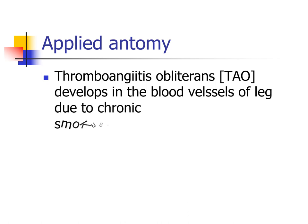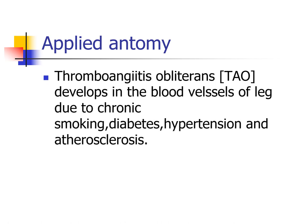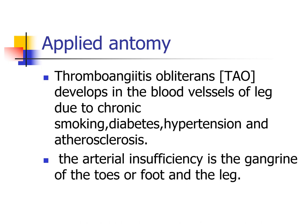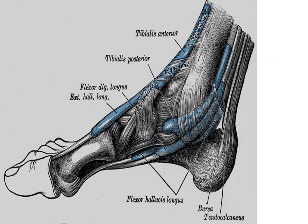Applied anatomy: thromboangitis obliterans (TAO) can develop in the blood vessels of the leg due to chronic smoking, diabetes, hypertension, and atherosclerosis. The arterial insufficiency can lead to gangrene of the toes. The structures deep to the flexor retinaculum from medial to lateral can be remembered by the mnemonic 'Tom, Dick, and Harry' — tibialis posterior, flexor digitorum longus, posterior tibial artery and nerve, and flexor hallucis longus. This completes the class on the posterior compartment of the leg. Thank you.